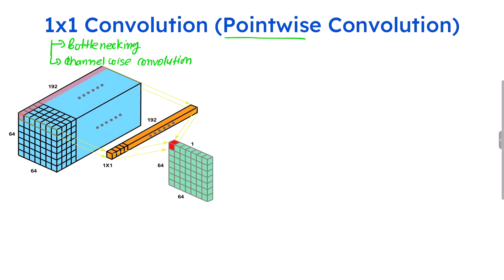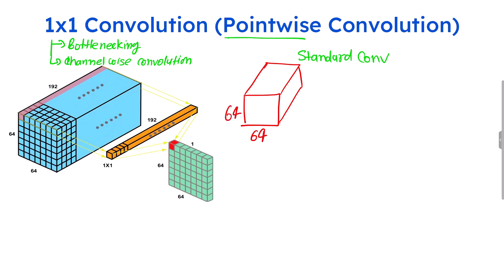Suppose you have a particular volume on which you want to perform convolution and you want to do a standard convolution first. In standard convolution, suppose you have an input of 64x64 with a channel depth of 192, and you apply traditional 3x3 convolution filters. The total filters applied are 32. The depth of each filter will automatically match the input depth of 192.